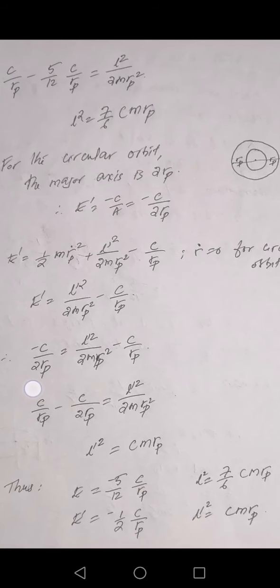Summarizing: initial energy E = −(5/12)(C/Rp), final energy E prime = −(1/2)(C/Rp). Initial angular momentum L² = (7/6)CMRp, final L prime² = CMRp. The conclusion is that E > E prime, meaning the initial energy magnitude is larger than the final, and L > L prime, since 7/6 > 1.